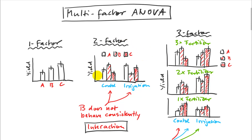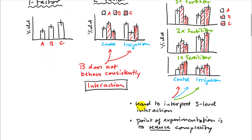The interesting part about factorial experiments is that you can look for interactions. We can see that varieties A and C don't behave the same way as variety B. Varieties A and C seem to benefit from irrigation, but variety B does exactly the opposite. That's usually important information — you are looking for these interactions. If there's a significant interaction effect, that usually means there's something interesting and unusual going on, and then you go back and interpret it if you can.